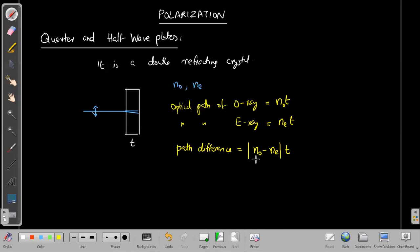In general, I use the modulus because the path difference should be a positive number. That is why I introduced the modulus of N_O minus N_E, the difference between the refractive indices, times the thickness. Now when this path difference equals a quarter of the wavelength,